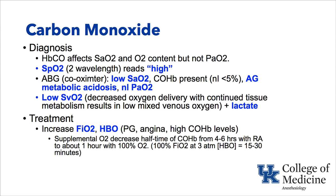Normally the carboxyhemoglobin level should be less than approximately 3% to 5%. In carbon monoxide toxicity, you will see a low SaO2, a high carboxyhemoglobin level, often an anion gap metabolic acidosis, and a normal partial pressure of oxygen. Mixed venous oxygen will be low because there's less oxygen delivered to the tissues, which continue to utilize it. Instead of the normal 70% range, it may drop to 40% to 50%. Lactate may also be elevated. Treatment is supplemental oxygen; hyperbaric oxygen can be used in severe cases, pregnancy, or angina, decreasing carboxyhemoglobin half-time down to 15 to 30 minutes.